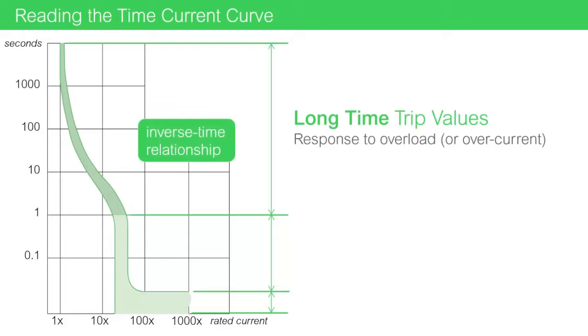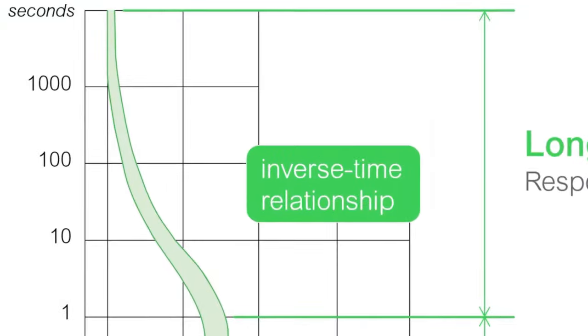You'll notice the long time trip curve has an inverse time relationship. That means, for this range of the time-current curve, the lower the current, the longer the response. The higher the current, the shorter the response.